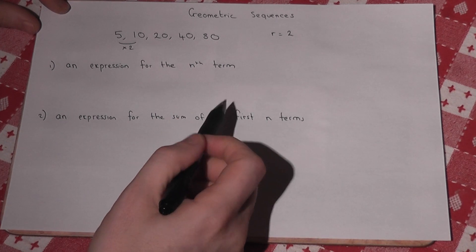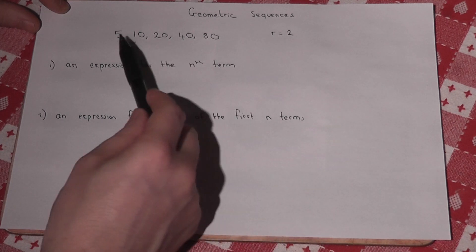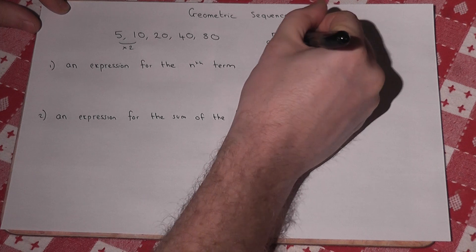Now what defines a sequence when it is geometric is its ratio, which in this case is 2, and its first term a, which equals 5.